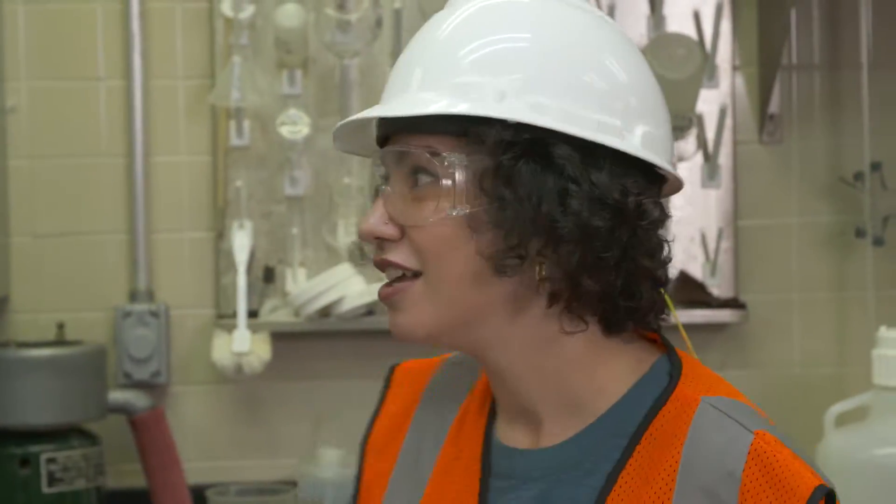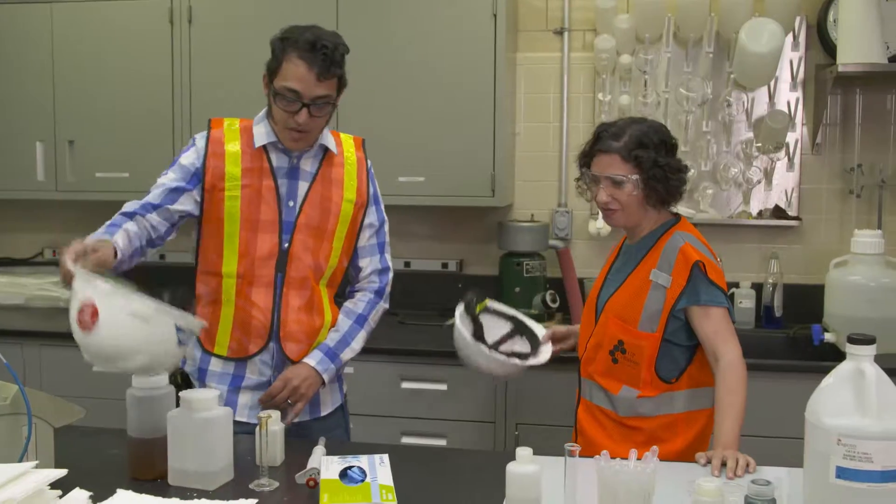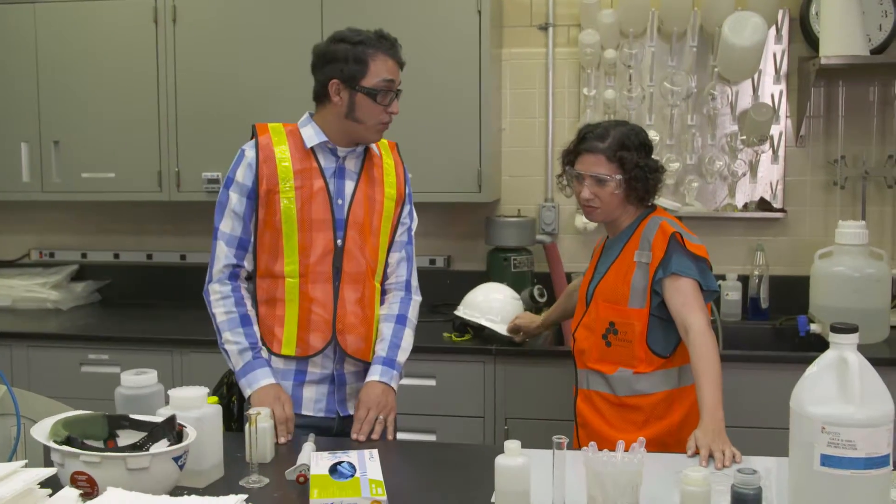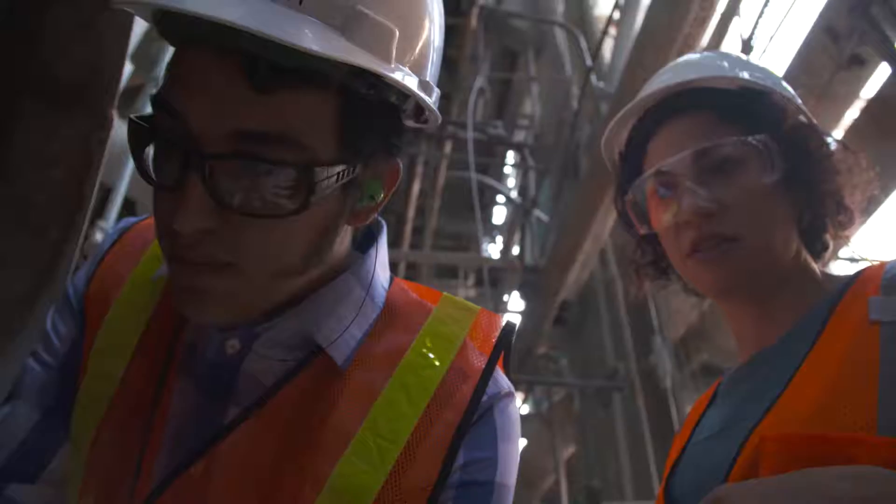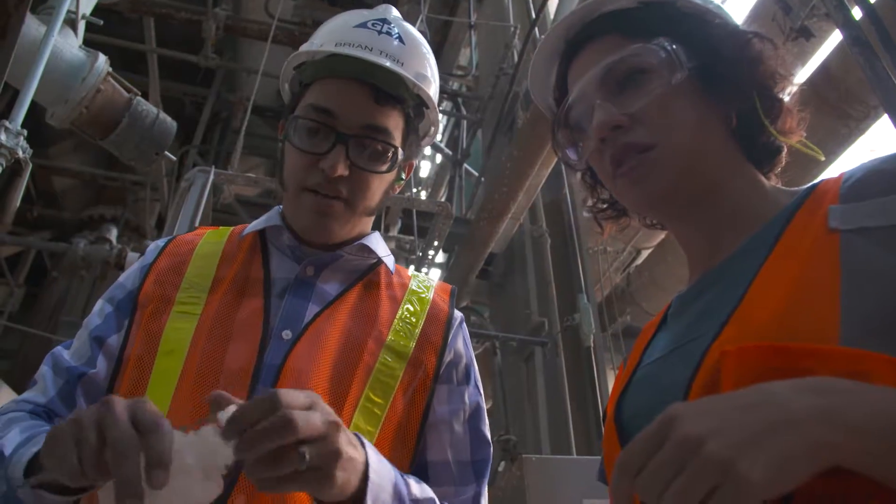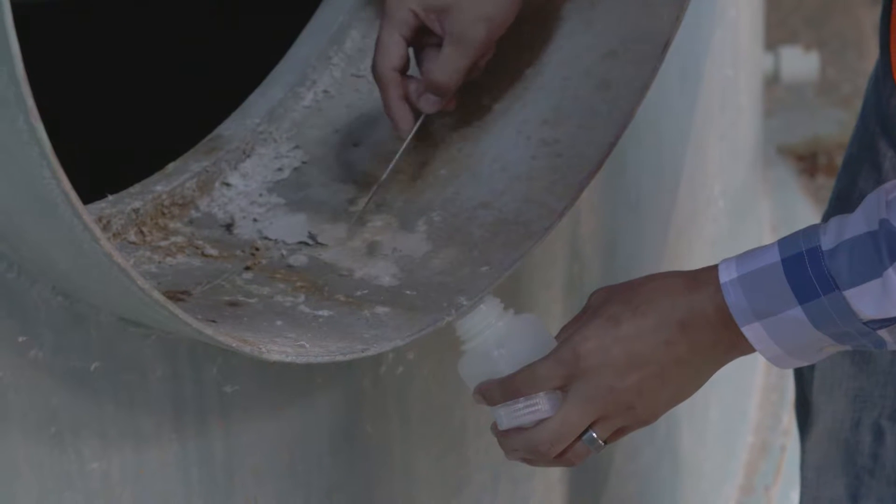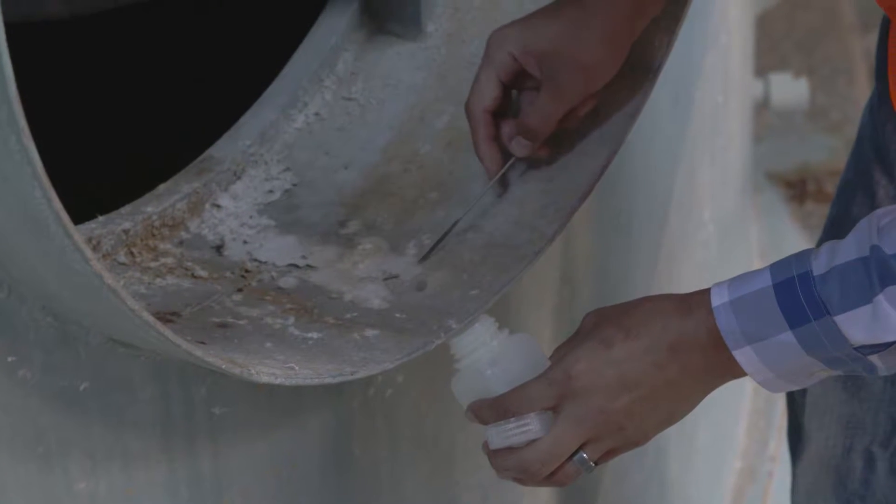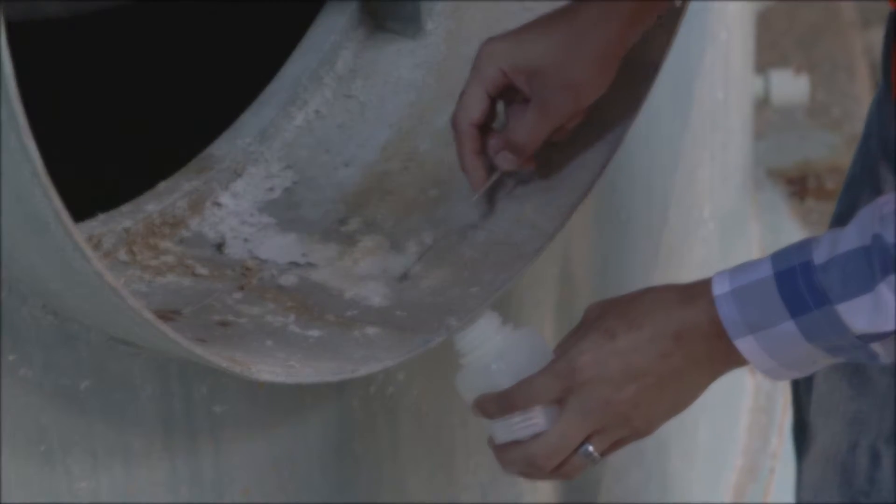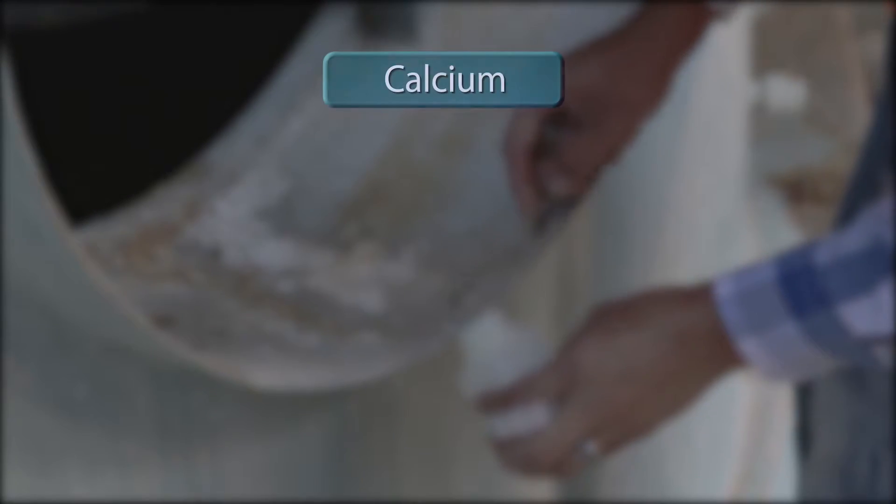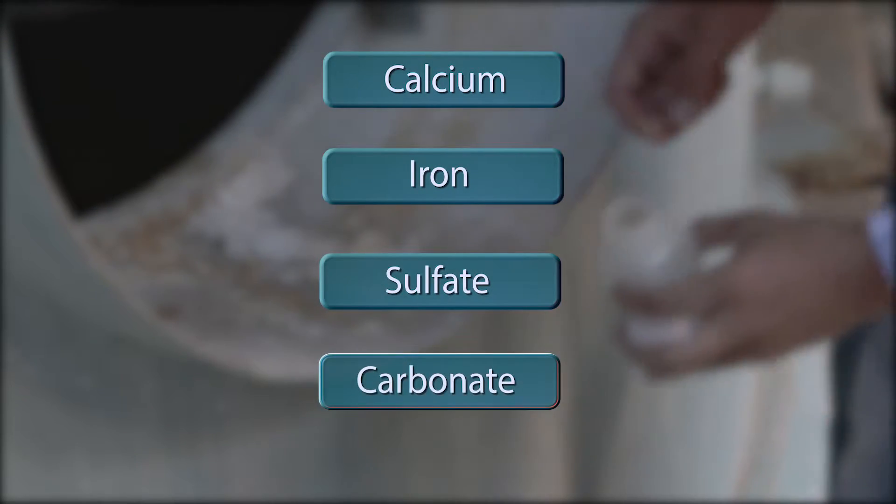So we found some buildup on a pipe out on the production line, so we're going to run some tests to figure out just what it is. We're going to run a series of four different spot tests. This hands-on investigation examines the chemical makeup of the buildup. Brian knows the chemicals used to extract cellulose might be in our sample, so he's going to run some spot tests on the usual suspects. Calcium, iron, sulfate, and carbonate.